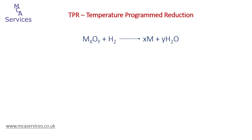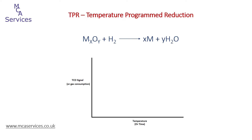The chemistry of TPR analysis is actually quite straightforward. In this case a metal oxide is reduced by hydrogen to form metal and water. The TCD output is typically displayed as a plot of temperature against TCD signal, although we can also display the x-axis as units of time. If we calibrate the TCD signal response, we can convert the TCD signal to specific hydrogen consumption and from there look at the kinetics and activation energy of reduction.